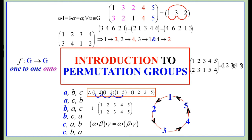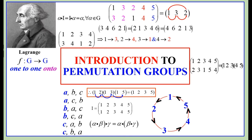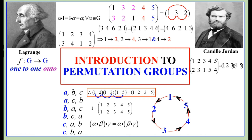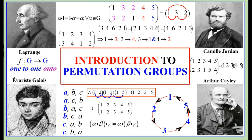By Cayley's theorem, every group can be viewed as a permutation group on the same set. The study of groups originally grew out of an understanding of permutation groups. Permutations had themselves been intensively studied by Lagrange in 1770 in his work on the algebraic solutions of polynomial equations. This subject flourished, and by the mid-19th century a well-developed theory of permutation groups was codified by Jordan in his book of 1870, which was in turn based on the papers left by Galois in 1832.